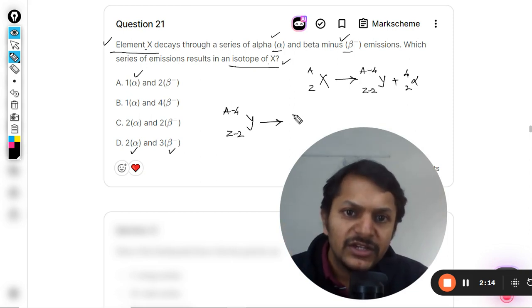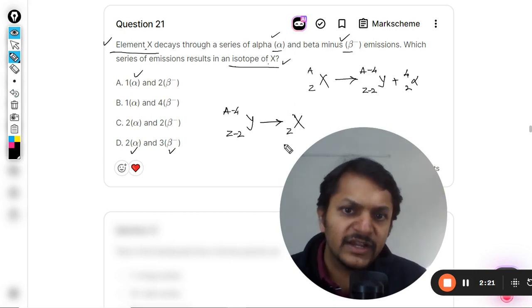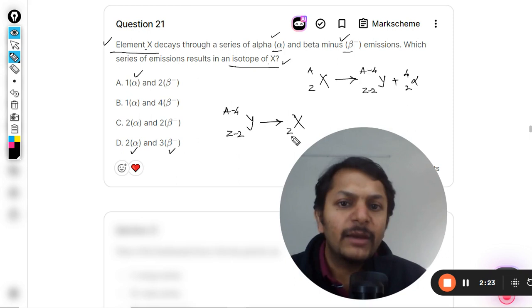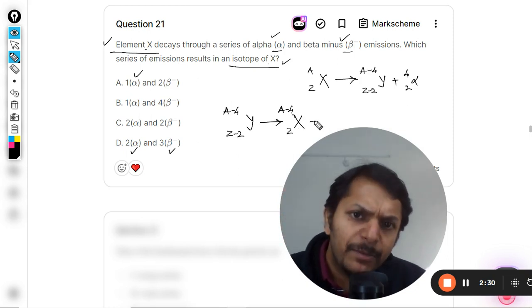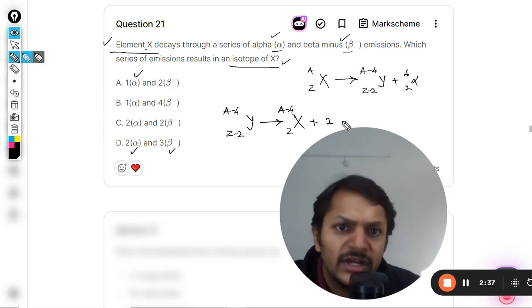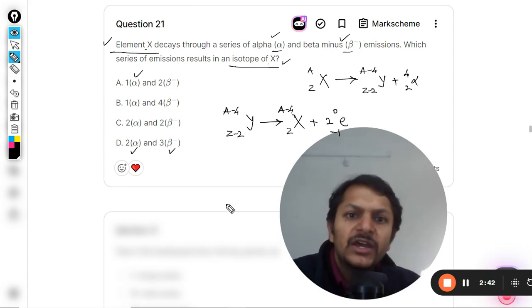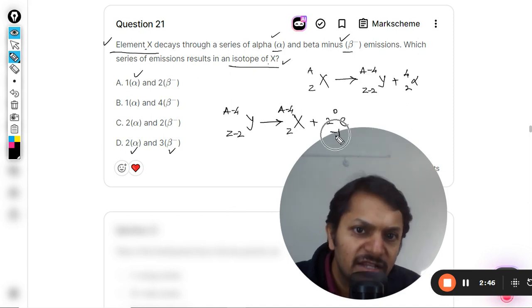The atomic number is going to increase by one, so we need two betas. This will again become X because the atomic number is coming out to be Z only. So I'm increasing the atomic number by two. The mass number remains the same. Two beta minus decays have taken place, and beta minus is actually an electron with charge -1 and mass number zero.